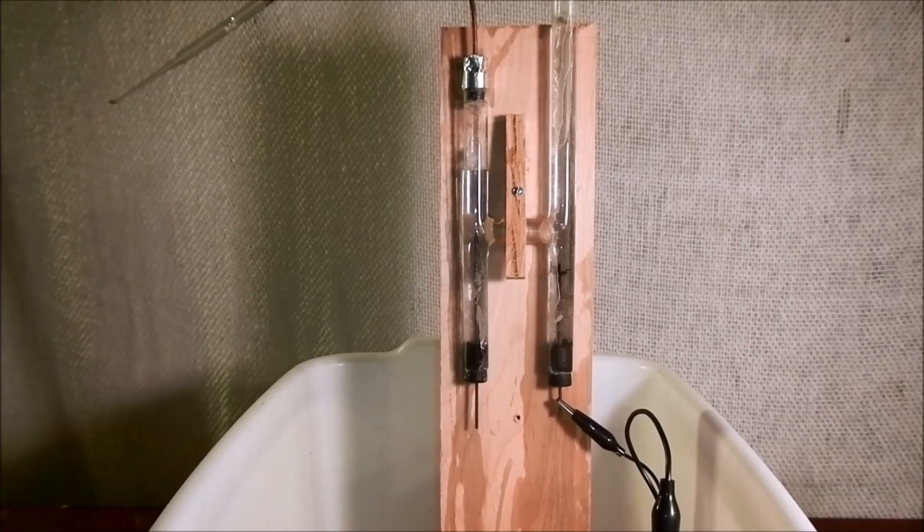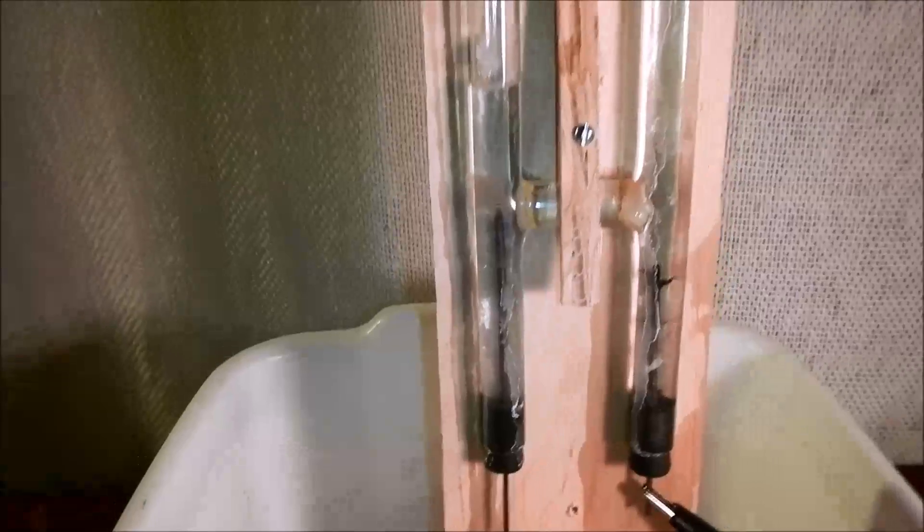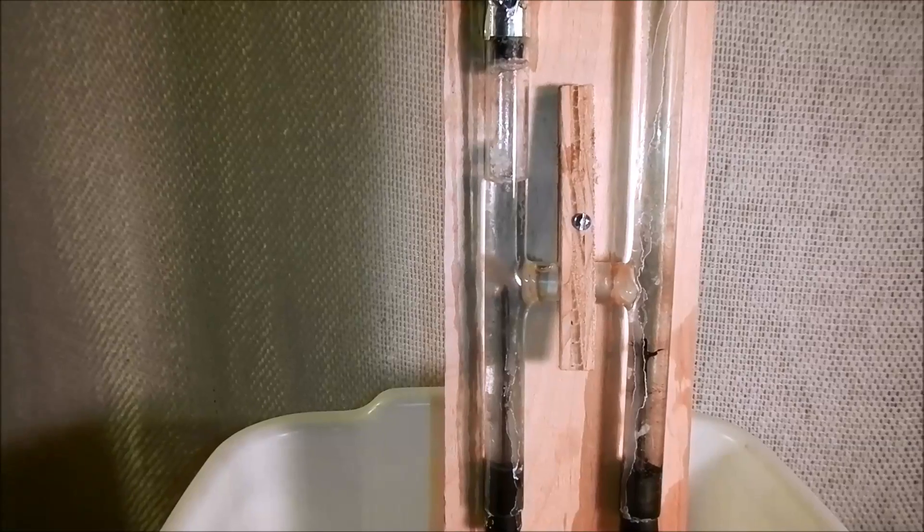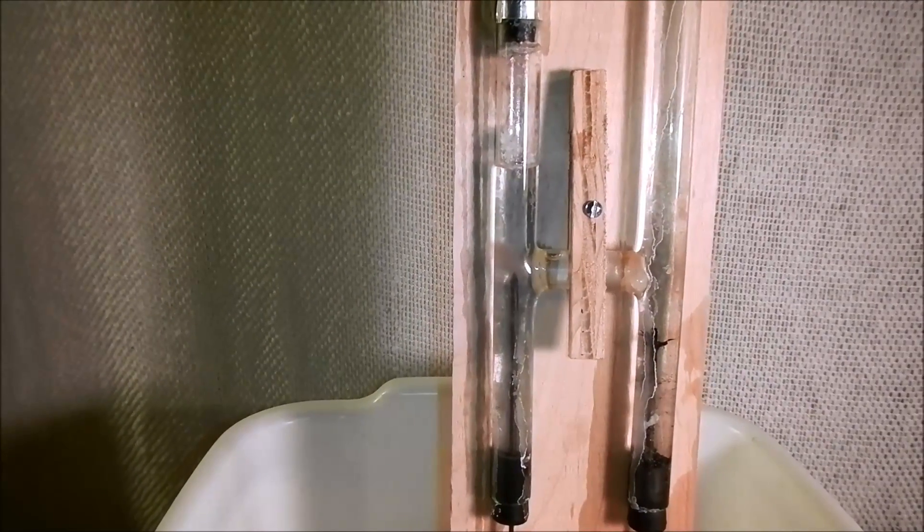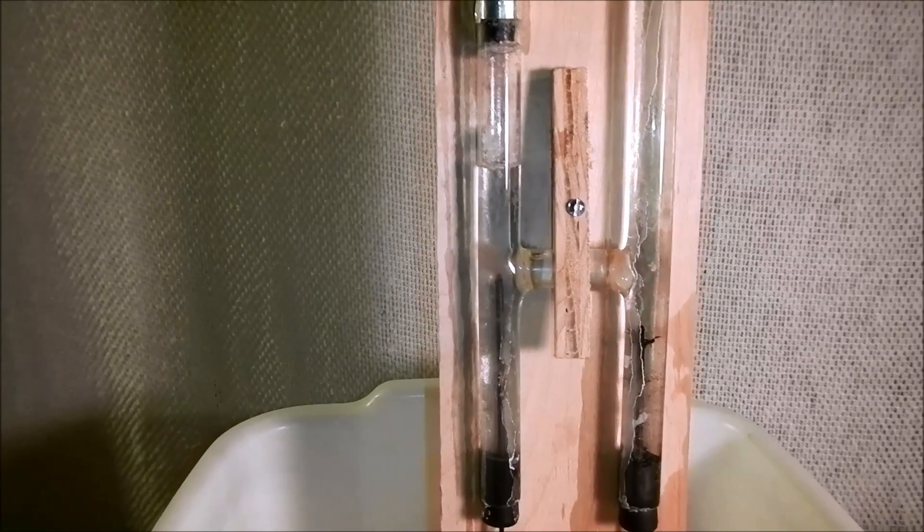Okay, I just wanted to share my do-it-yourself Hoffman apparatus. The Hoffman apparatus is a kind of H-shaped glass tube that allows you to separate hydrogen and oxygen, the basic components of water.